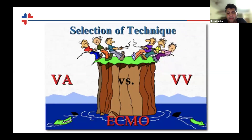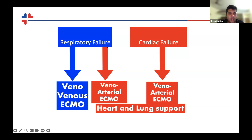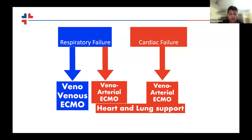There is also a constant debate about VA versus VV ECMO. To simplify: all patients with cardiac failure will need veno-arterial ECMO for heart and lung support. If you have a pure respiratory failure, you just need veno-venous ECMO. If you have cardiopulmonary failure — for example ARDS with septic shock or multi-organ failure needing higher inotropic support — then you also need to support the heart and lung, which is veno-arterial ECMO. There are also some hybrids beyond this.